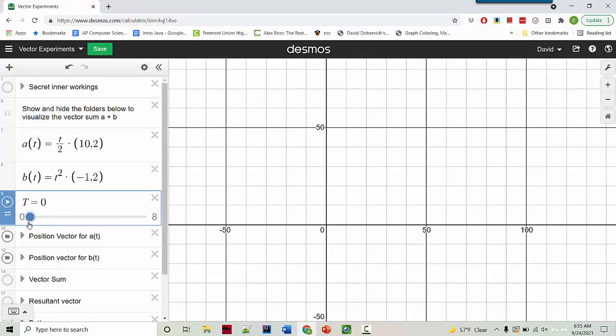OK. So you see that the red vector, which is a of t, is scaling at a constant rate. The b vector is scaling as times squared. And so it starts out scaling slowly, but then it gets longer faster. OK. What happens if we look at the vector sum?